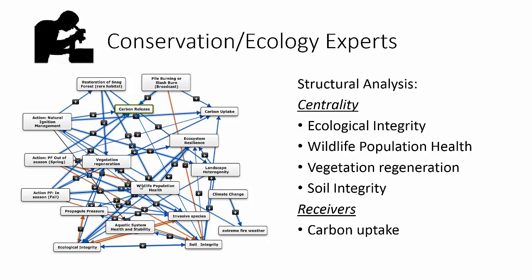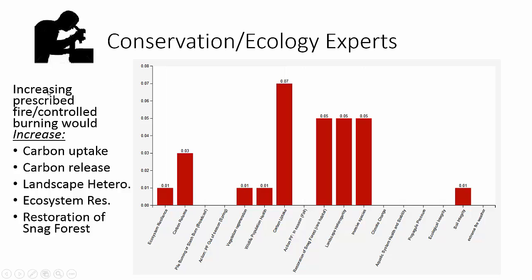When we look at the conservation and ecological experts' model, they understandably focused on the ecological dynamics related to these two policies. Central to that were things like ecological integrity, wildlife population, and they spent a lot of time talking about the carbon dynamics that fire contributed to. Running the same scenario of increasing prescribed burns, we see that because their expertise and how they define the system differed, their predicted response differs. They focused on how it affects carbon and restoration of snagged forests, landscape heterogeneity, and so on.